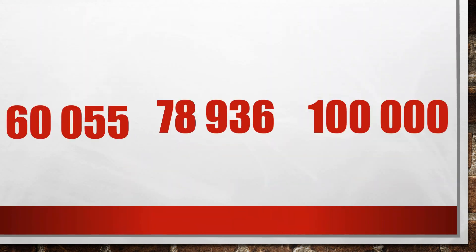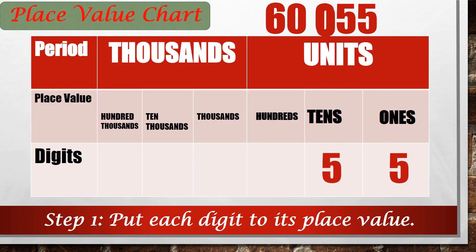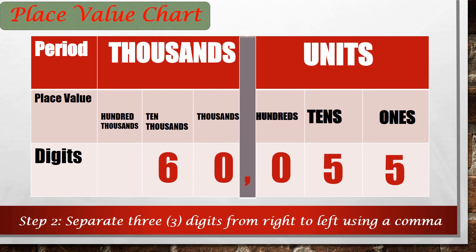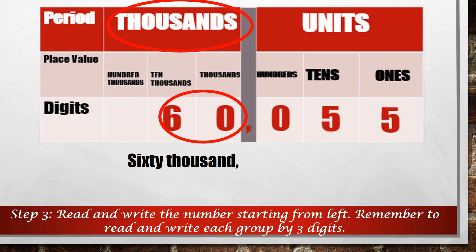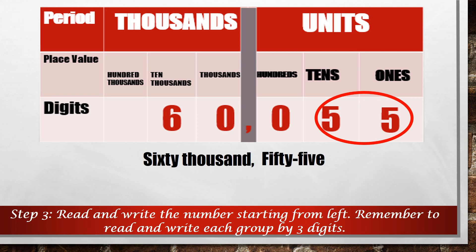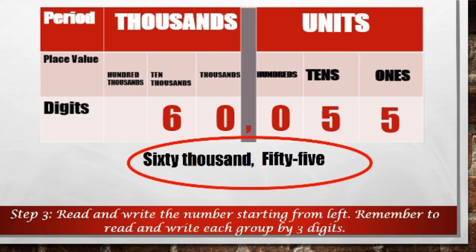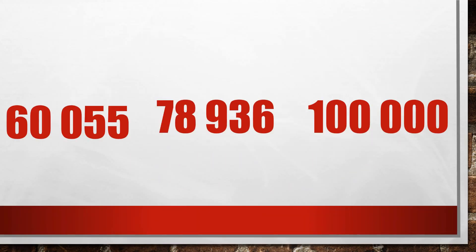Let us now look at the following numbers and try to read and write them in words. For our first number, we put each digit in its place value. Then we separate groups of numbers using commas. Starting from the left, we have 60 in the thousands group, so we can write it as 60,000. 55 is in the units group, and we do not say its group name after the number, so we write it as 55. Put together, we can read and write the number as 60,055.